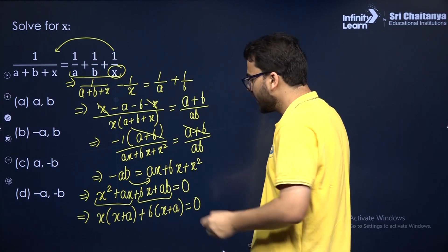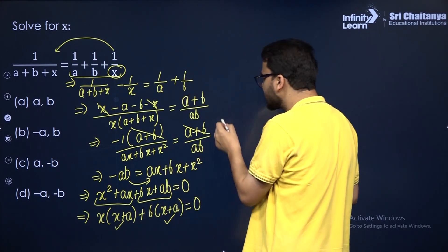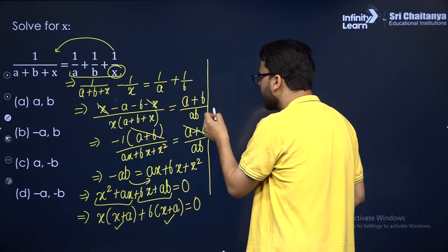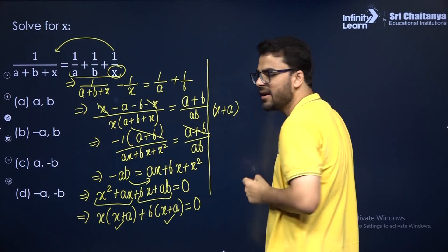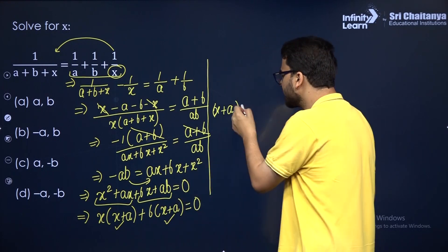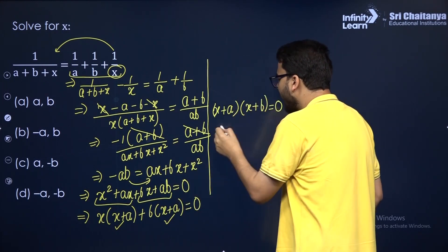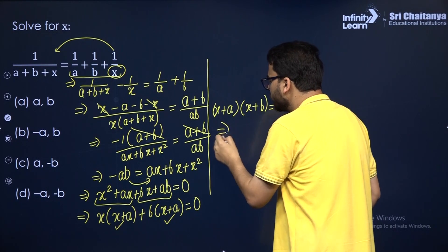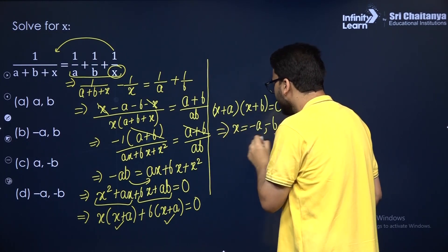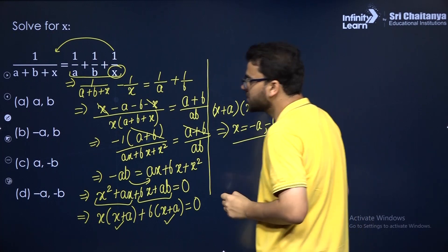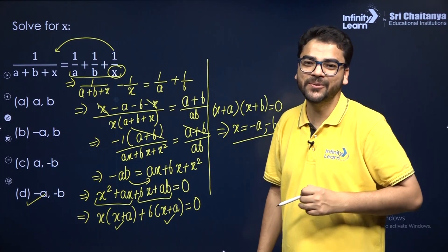I hope that's clear. Now out of the whole expression take (X + A) as common, so you'll be left with (X + B) = 0. Therefore the two roots of this quadratic equation are minus A and minus B. So like this you can solve questions of this form.